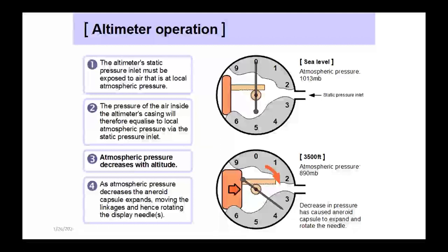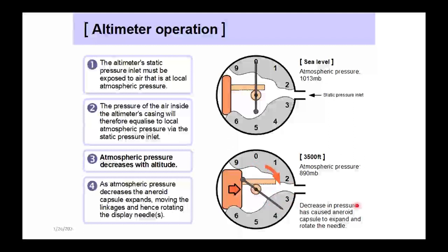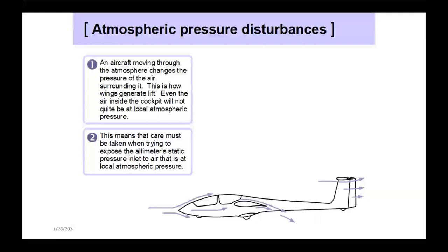With the altimeter's operation, the static pressure is exposed to the local air, and the pressure inside the casing equalizes with the pressure from outside, changing the volume of the capsule. At sea level the capsule is rather small, pointing at zero, assuming standard pressure. If we take it up to 3,500 feet, pressure drops to 890 millibars at the static port, the capsule expands, and through the gear train the needle rotates.